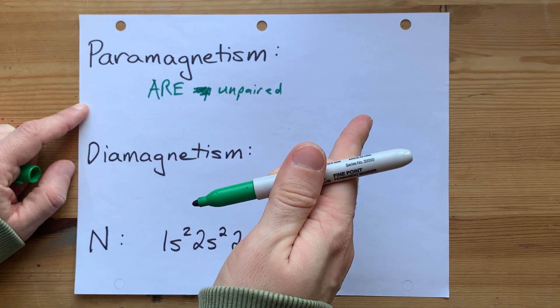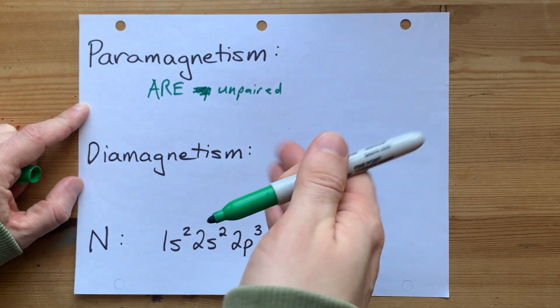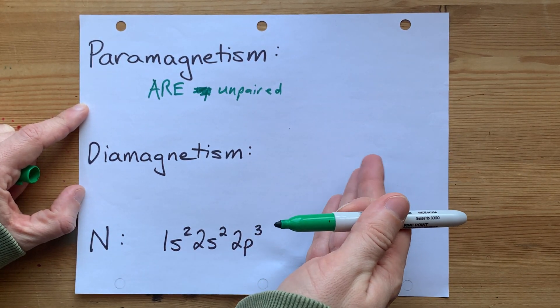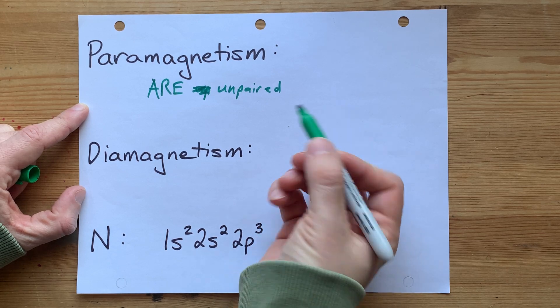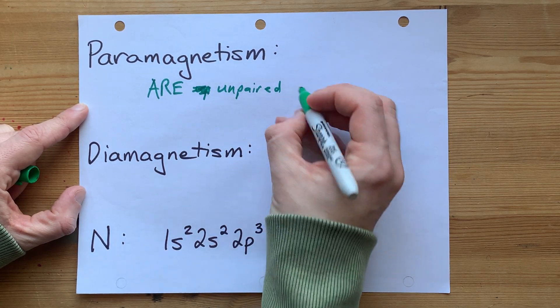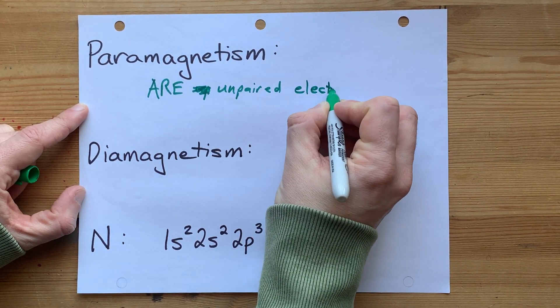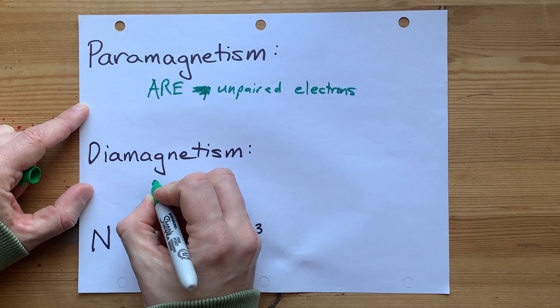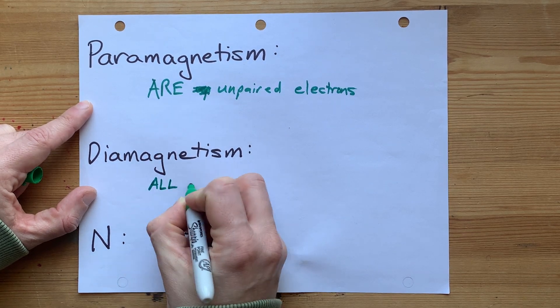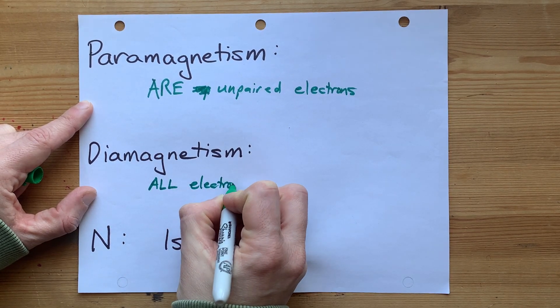That's easier for single atoms if your teacher is going to ask you about those, like nitrogen. It's tougher for molecules because you have to use molecular orbitals to figure it out. If any of the electrons in the molecular orbital diagram are unpaired, then you have a paramagnetic compound. And diamagnetism will be the one that dominates if all of the electrons are already paired.